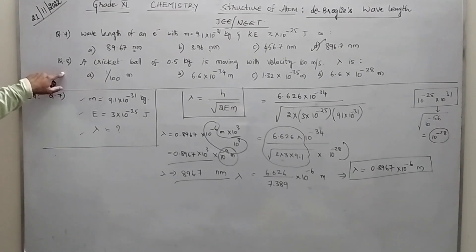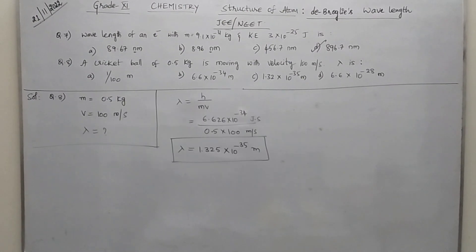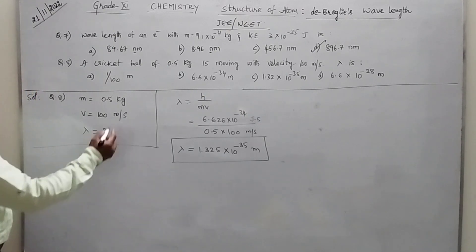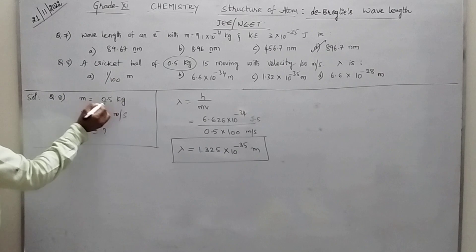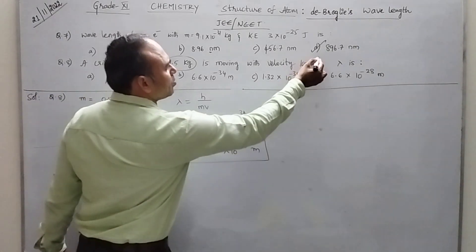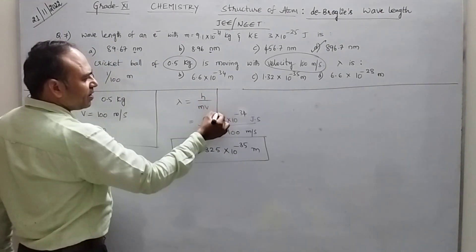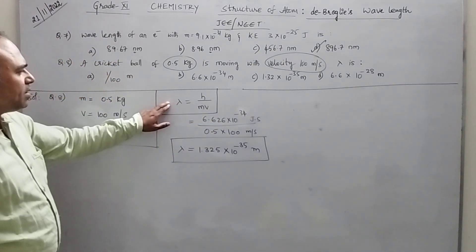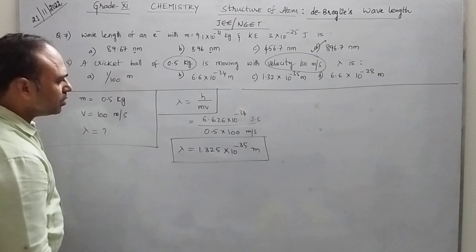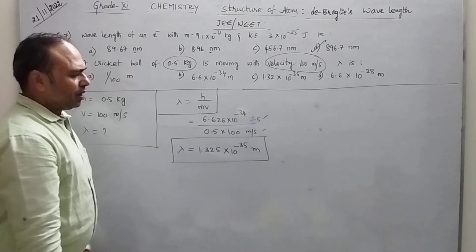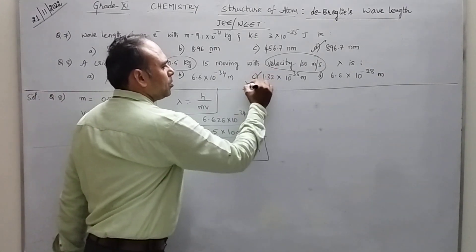Now let us move to question number 8. My target is to give you more questions for practice. A cricket ball of mass 0.5 kg is moving with a velocity of 100 meter per second — V is 100. Asking to find lambda. Apply de Broglie's wavelength: lambda is equal to Planck's constant by mass into velocity. Substituting the values, we finally get the answer: 1.325 into 10 to the power of minus 35. Option C is the correct answer.